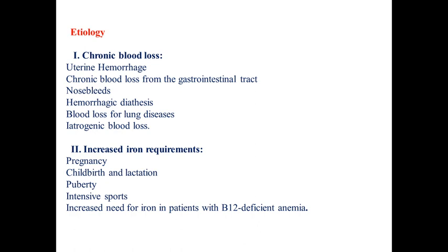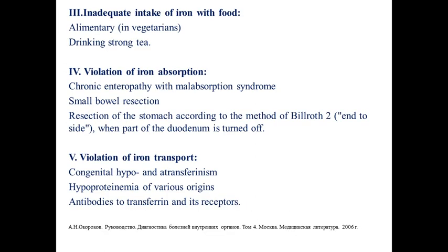In third place is inadequate intake of iron with food — for example in strict vegetarians or those drinking strong tea; tea contains tannins which bind iron and reduce its absorption. Violation of iron absorption may occur due to chronic enteropathy with malabsorption syndrome, small bowel resection, or gastric resection. Violation of iron transport may be due to congenital hypo- or atransferrinemia, hypoproteinemia of various origins, or antibodies to transferrin and its receptors.